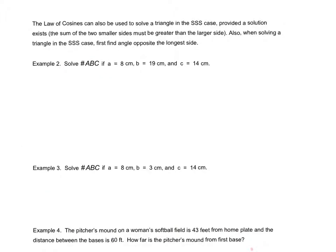We can also use the law of cosines to solve a triangle when we know all three sides, as long as a triangle actually exists with those sides. In order for that to happen, the sum of the two smaller sides must be greater than the larger side. In example 2, 8 and 14 are our two smaller sides. 8 plus 14 is 22, which is greater than 19, so there is a triangle.